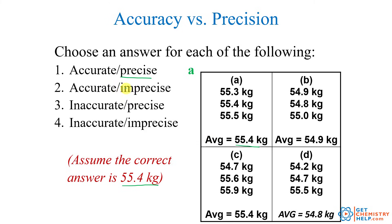Which are accurate but not consistent — imprecise? That looks like C, because when you average these out you get a value very close to the true value, but the data is much more spread out — ranging from 54.7 all the way up to 55.9. And which are not accurate but are precise, or consistent? That looks like B, because the average of the three values, 54.9, is not on target, but they are very close to one another, only off by 0.1 or 0.2.